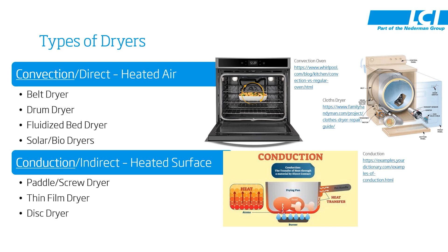An indirect dryer works most like a frying pan. In both cases there's a heat source — in the case of a frying pan it's a burner, and in the case of a dryer it's a thermal fluid or maybe steam. This heat is passed up through a metal surface and into the medium you're trying to heat. A thin film dryer or other indirect dryers are evaporating mostly foul-smelling water.